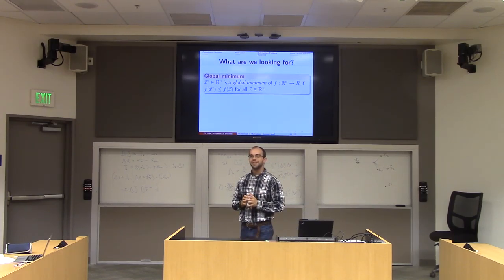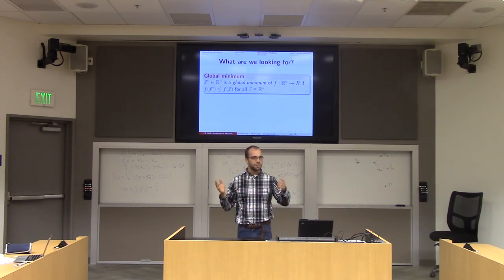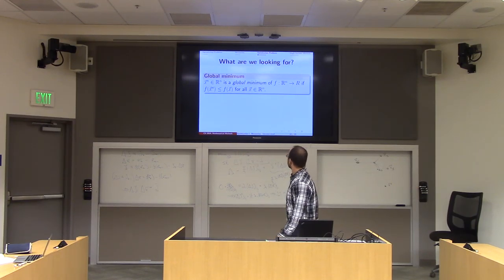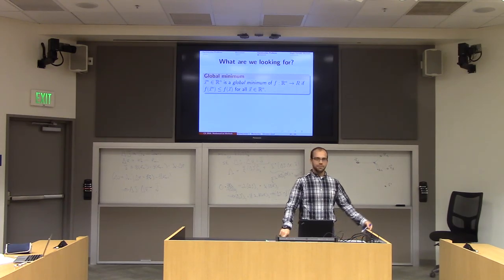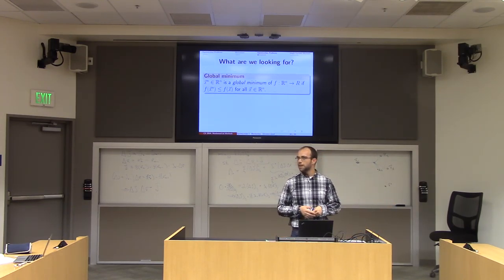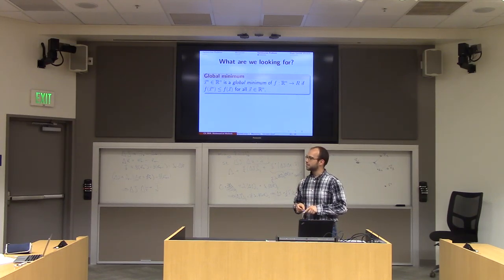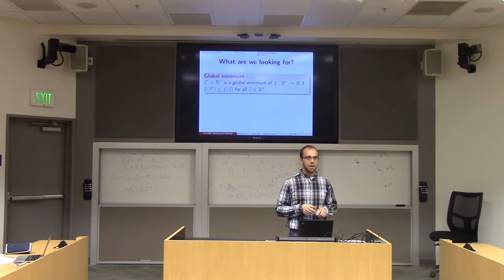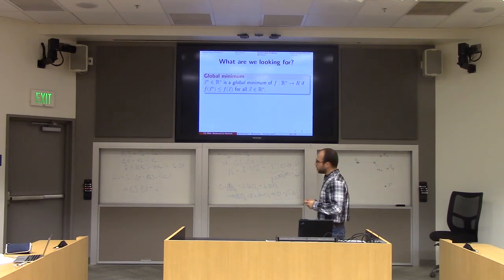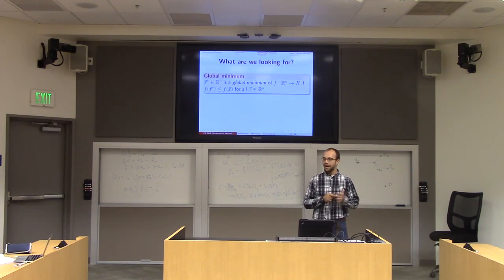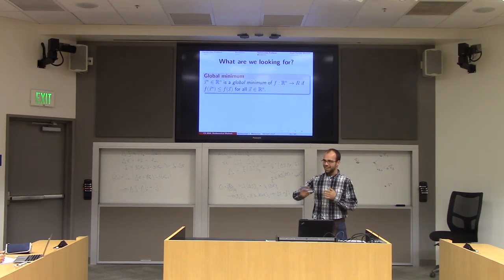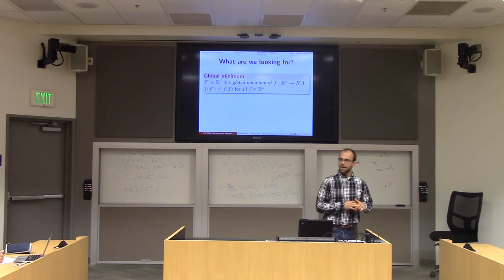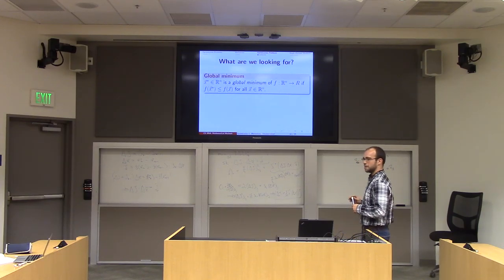Optimization problems show up everywhere — in physics finding low energy states, in machine learning, in geometry. All of these need you to find minima, maxima, or saddle points of functions. In this class I'll try to be consistent and only talk about minimization; maximizing and minimizing are the same because you can flip the sign. But we've got to watch out for pernicious saddle points.